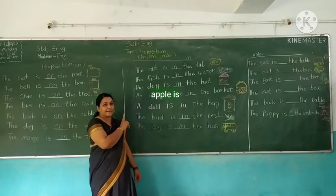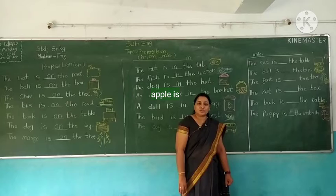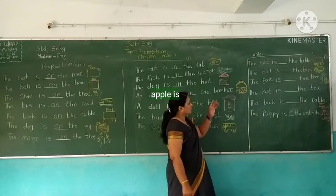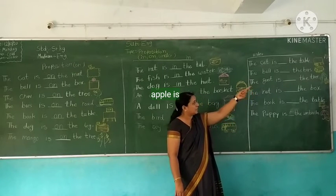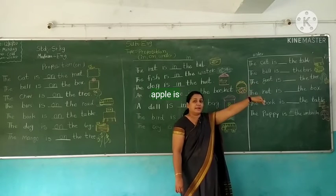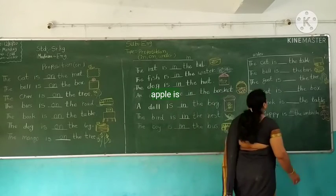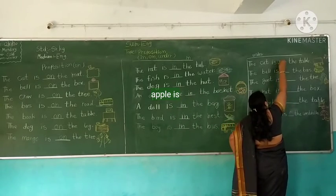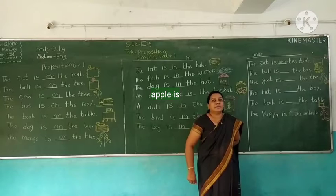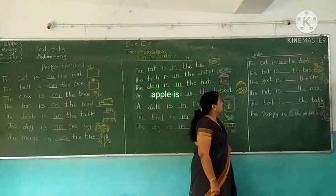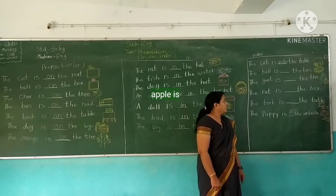First is 'on,' second is 'in,' and the last one is our preposition 'under.' Which one? Under. So the first sentence: look at the picture — it is a cat. The cat is under the table. That means the cat is under the table. We write U-N-D-E-R: under. The cat is under the table. Then next: the ball is under the bus. Where is the ball? The ball is under the bus.